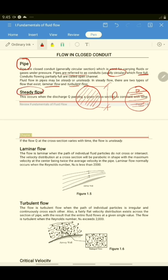So steady flow, this occurs when the discharge Q passing a given cross section is constant with time. So the flow rate here is constant with time when it passed into a given cross section of the pipe. If the flow Q at the cross section varies with time, so the flow there is unsteady.